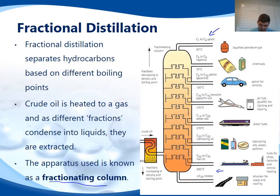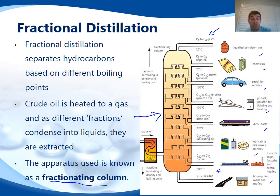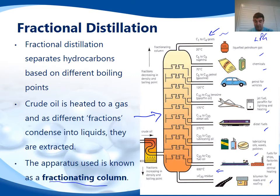This column here is known as a fractionating column and you can see the different compounds and different groups coming out at different levels. We can see our very low, small chain carbons coming out at the top — our LPG, butane for cigarette lighters, octane for cars, aviation fuels, and so on.